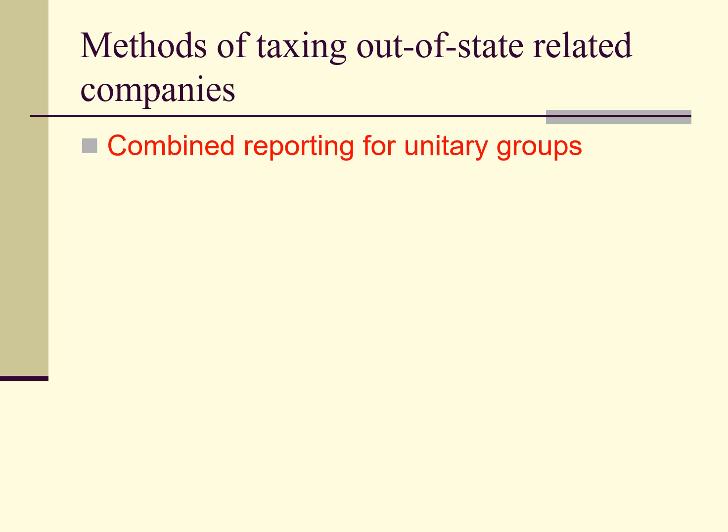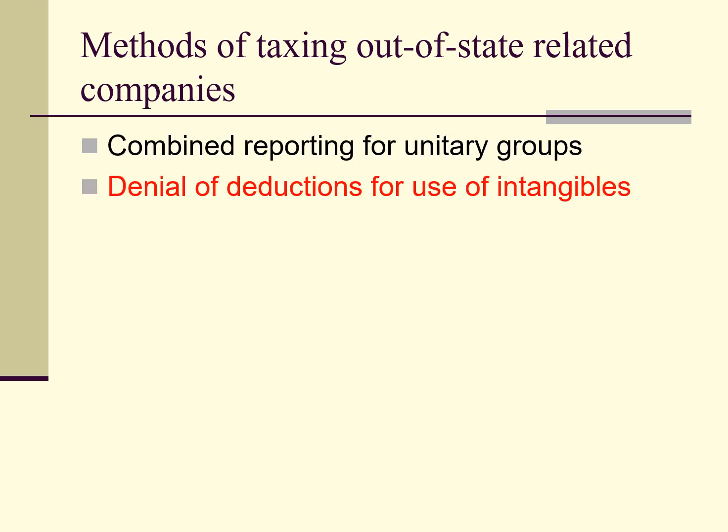Under this method, if two companies constitute a unitary group, then the net income of both companies is apportioned to a state if one of the companies has nexus in the state. In the case of the use of a related company's intangibles in a state, the state may deny the in-state company deductions for the use of those intangibles.